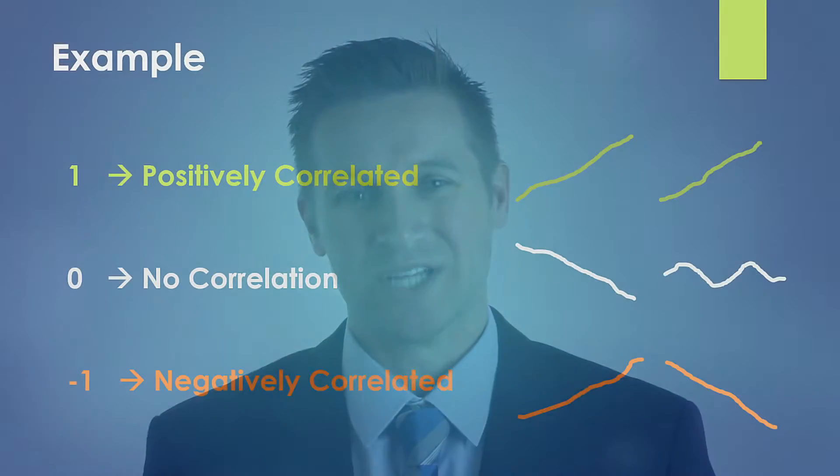A correlation of zero means no correlation. We have two stocks where we can't really predict how they're going to move against each other — if one goes up, we don't know if the other will go up or down. Things can fall anywhere on this range; it could be 0.75 correlated or negative 0.25 correlated. You're just trying to understand the description of how two investment opportunities are related.